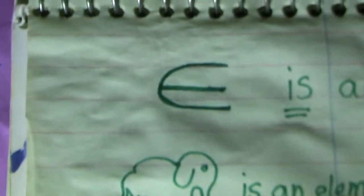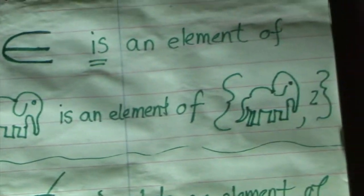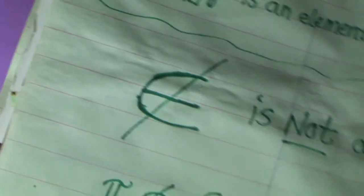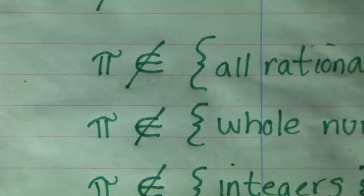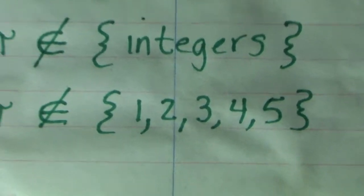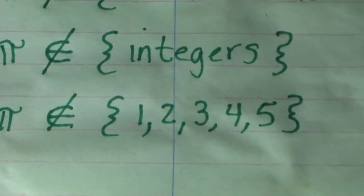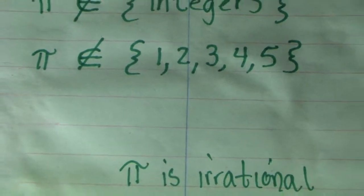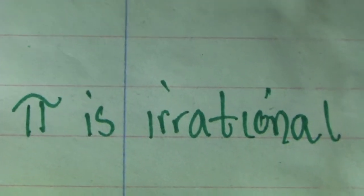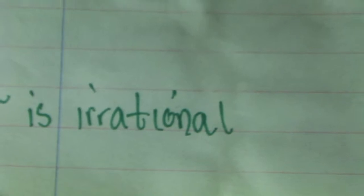That long, elongated, e-looking thing — that is 'an element of' the elephant. There is an element of the set that contains an elephant and a two. And the same symbol with the slash — that means it's not an element of. Pi is not an element of all rational numbers, nor is it an element of the whole numbers, or integers, or the set that contains the numbers one, two, three, four, and five. Pi is actually an irrational, because it never terminates or repeats.